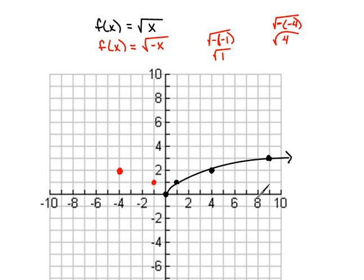If I were to put in a 9, the square root of negative x, if I use a negative 9 this time, that's the same thing as saying the square root of 9, which is 3. So, now we have this graph that looks something like this.